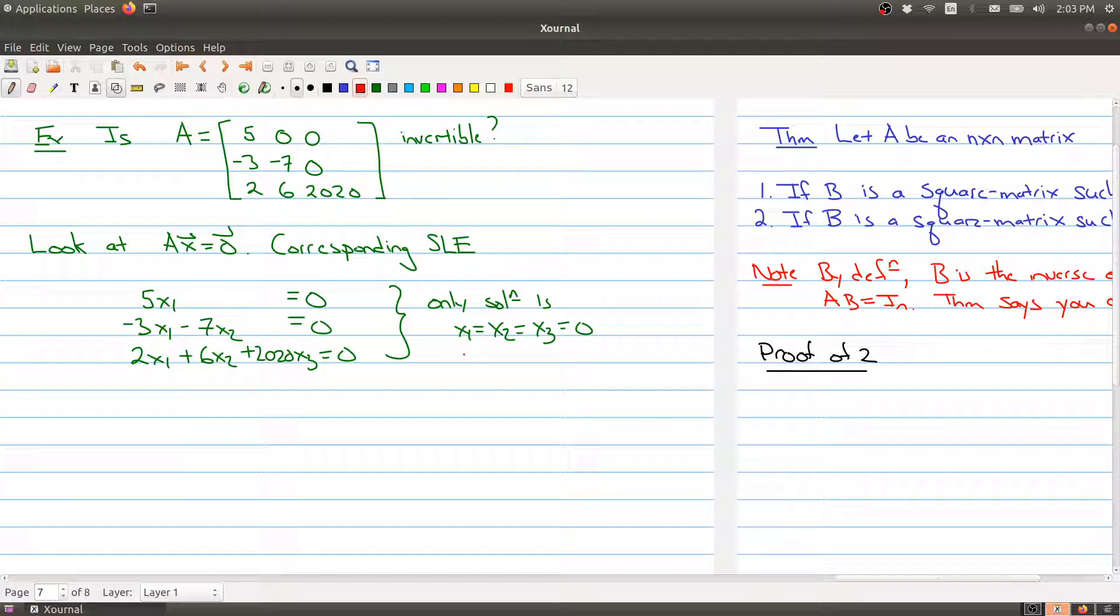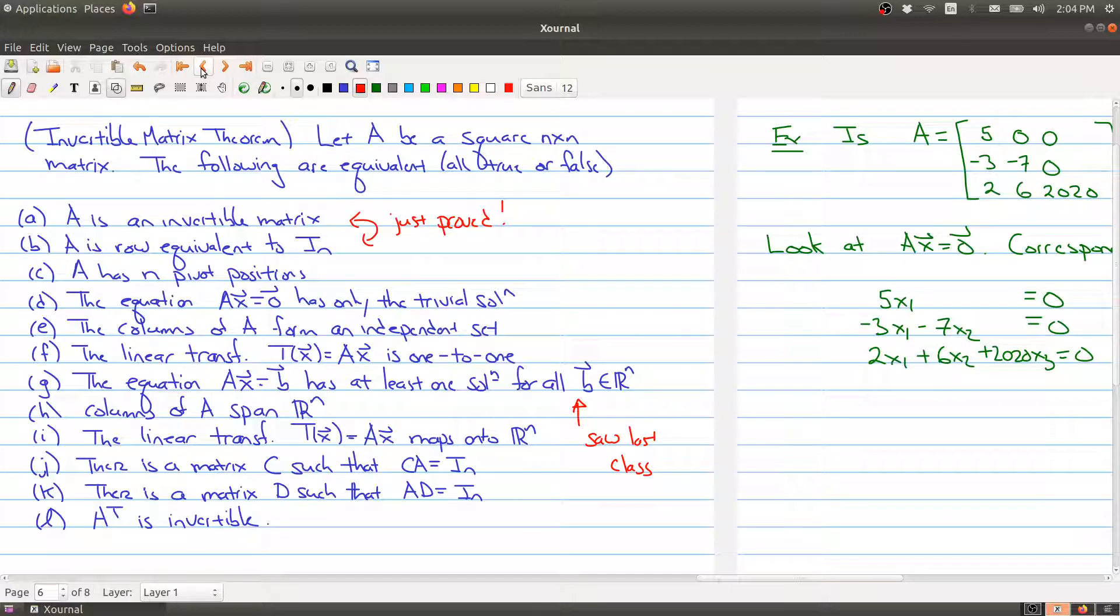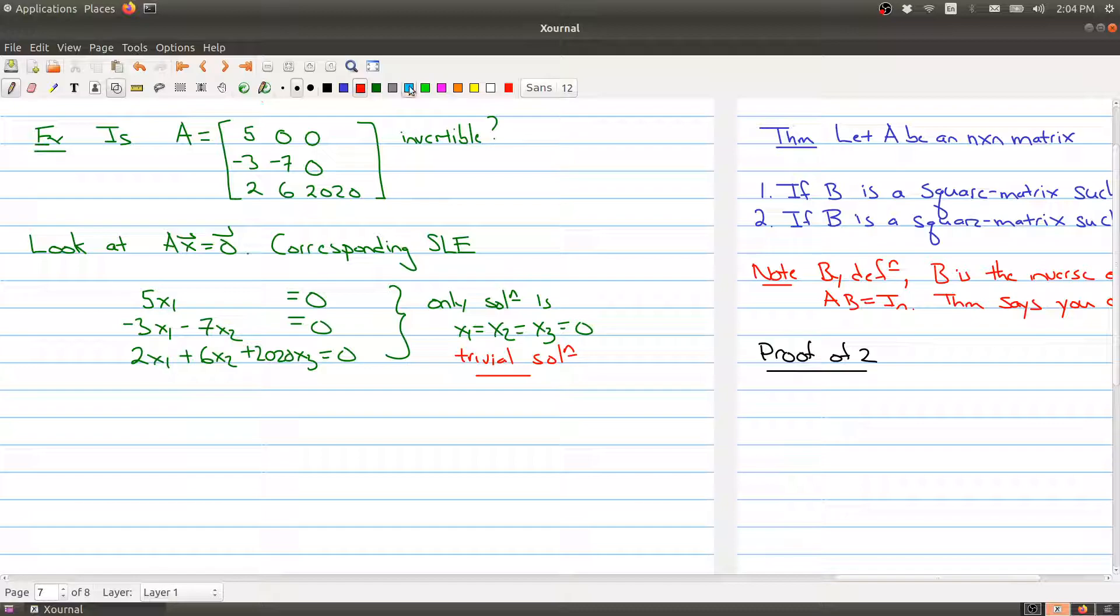Remember that this is the case of the trivial solution. Because we have that this is only the trivial solution, that means that our matrix A is invertible. So A is invertible since D is true.